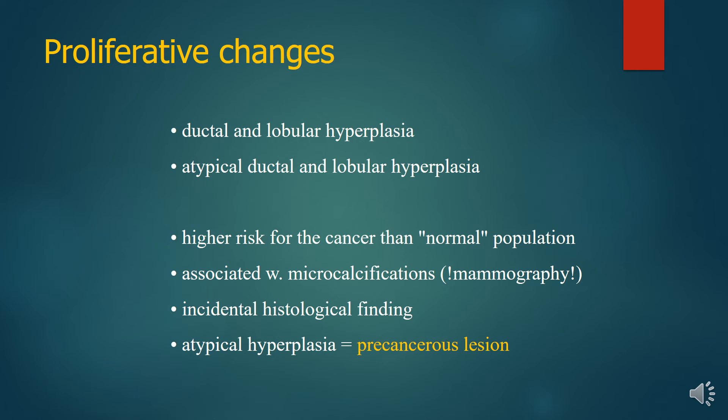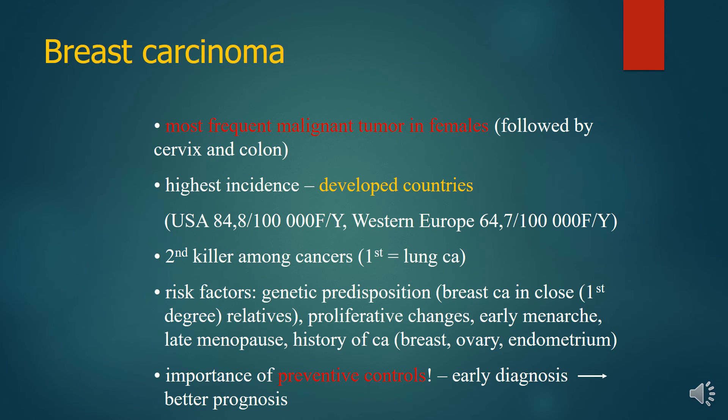Atypical ductal and lobular hyperplasia carry a higher risk of cancer than the normal population and are associated with microcalcification on mammography, often as an incidental surgical finding. Breast carcinoma is the most frequent malignant tumor, with the highest incidence in developed countries and the second most common cause of cancer death — after lung cancer. Risk factors include genetic predisposition and proliferative changes, and preventive control is important.